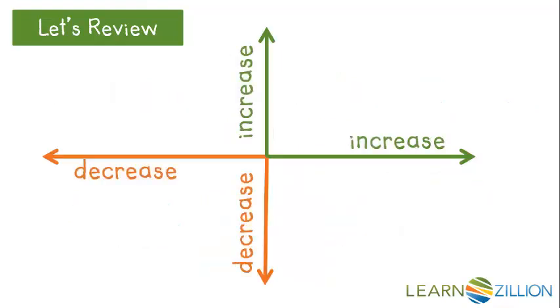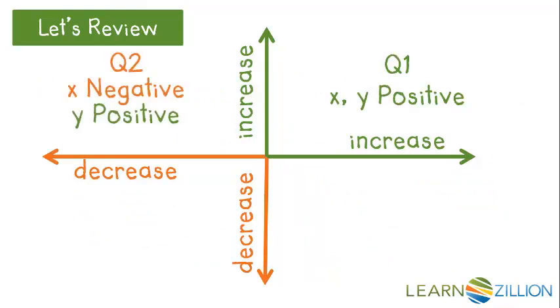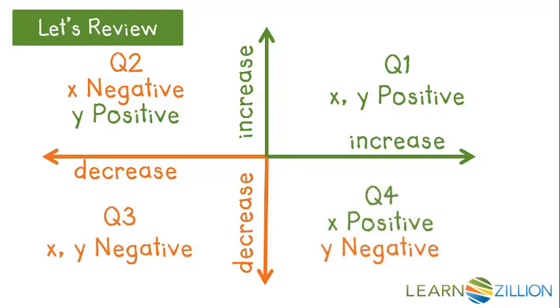Let's review the quadrants of the coordinate plane. In quadrant 1, x and y values are both positive. In quadrant 2, x values are negative, y values are positive. In quadrant 3, x and y values are both negative. In quadrant 4, x values are positive, y values are negative.